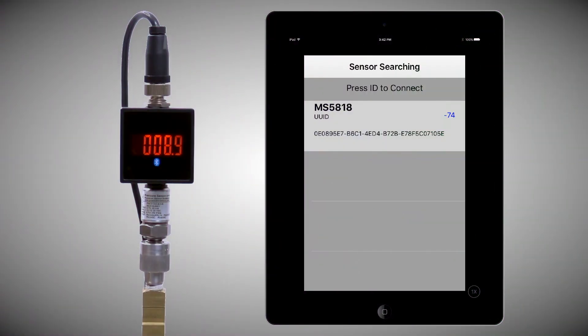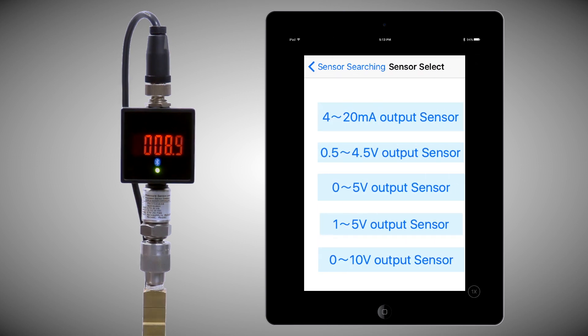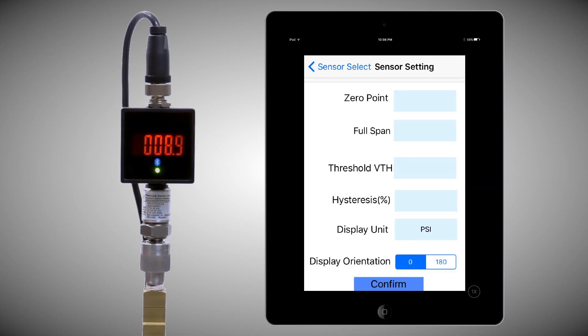Configuring the display module is straightforward from the app's setup screens. Once the unit has been paired with an iPad or iPhone, the user simply selects from one of the various sensor output types.